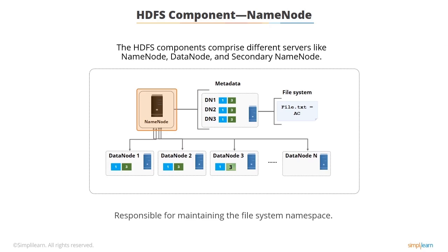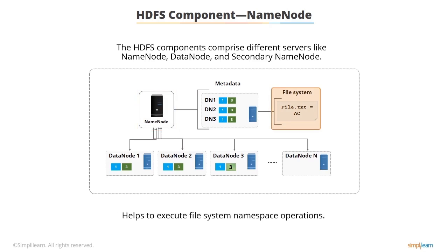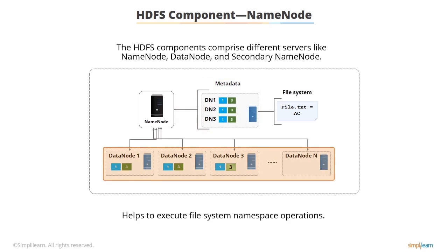Name node maintains and executes file system namespace operations such as opening, closing, and renaming of files and directories present in HDFS. The namespace image and the edit log store information of the data and metadata. Name node also determines the linking of blocks to data nodes. Furthermore, the name node is a single point of failure.